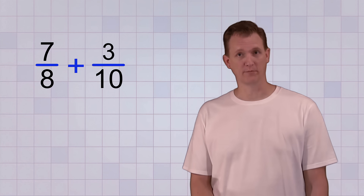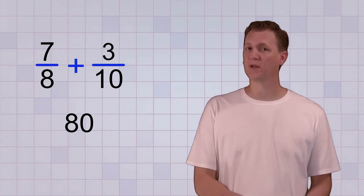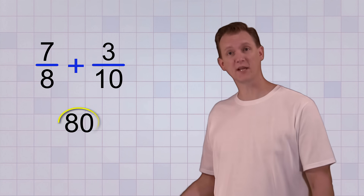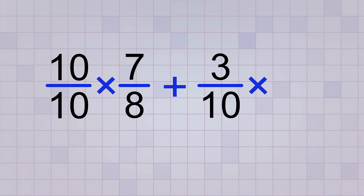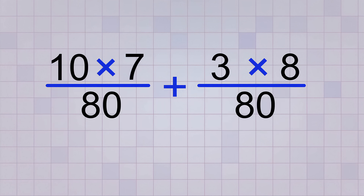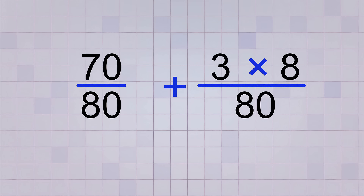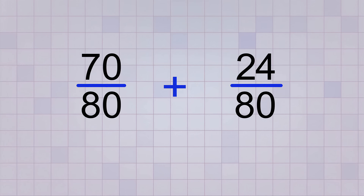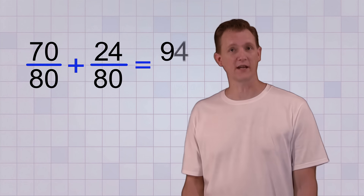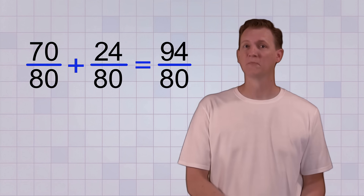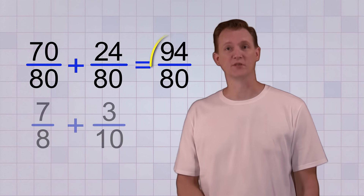Let's add the fractions 7 over 8 and 3 over 10. Our common denominator for this problem is going to be 80, because that's what we get when we multiply the denominators together. We'll multiply our 7 over 8 by the whole fraction 10 over 10, and we'll multiply our 3 over 10 by the whole fraction 8 over 8. When we do our multiplication, 8 times 10 gives us 80 on the bottom of both fractions. For the top of the first fraction, 7 times 10 equals 70. And for the top of the second fraction, 3 times 8 equals 24. Now that we have like fractions, we can just add the top numbers: 70 plus 24 equals 94. And keep the bottom number the same, 80. So 7 over 8 plus 3 over 10 equals 94 over 80.